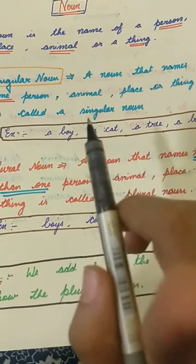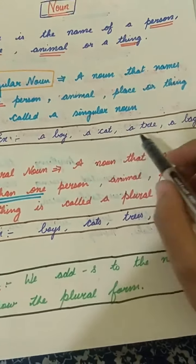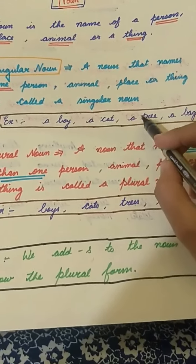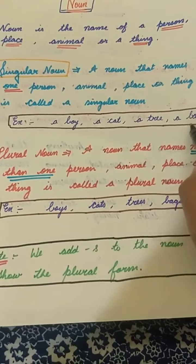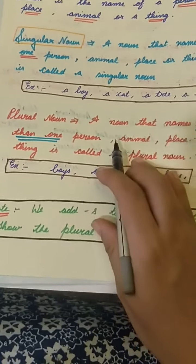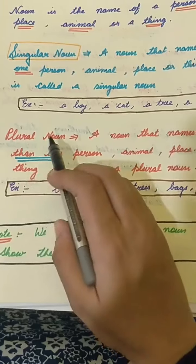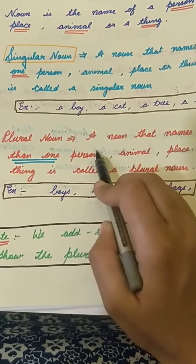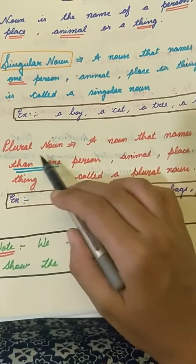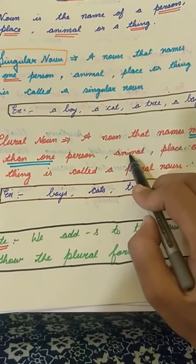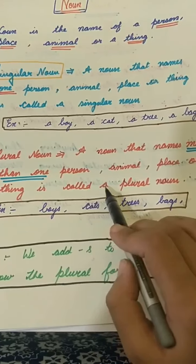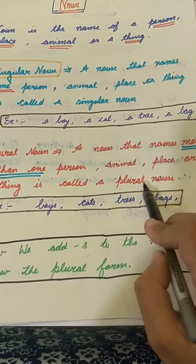For example: a boy — I am talking about a single boy. A cat — I am talking about a single cat. A tree — I am talking about a single tree. A bag. Now, what is a plural noun? A noun that names more than one person, animal, place, or thing is called a plural noun.